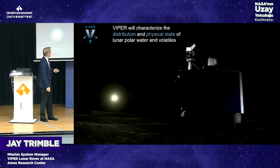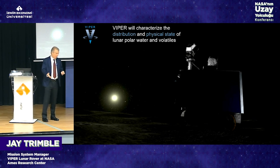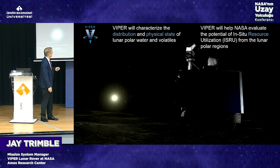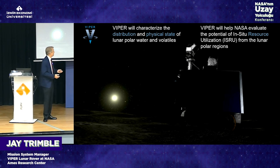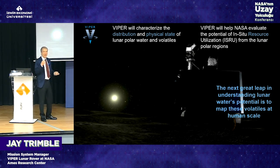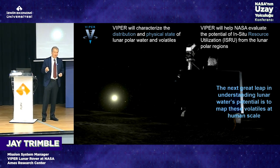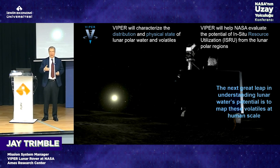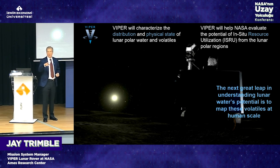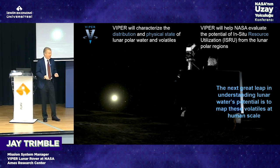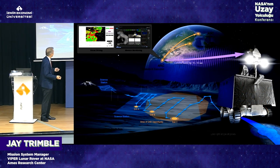In-situ resource utilization — ISRU — simply means living off the land. The LCROSS impactor mission, within the last 12 years, found evidence of water on the moon — a dramatic discovery. Jay urged the audience to remember these moments of unexpected discovery, noting that equally dramatic findings will happen in their lifetimes, even if we cannot predict what they will be.